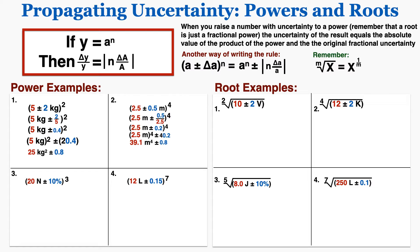Number three has a percent uncertainty, and because percent uncertainties behave similarly to fractional uncertainties — like 10% is just 0.1 as a fractional uncertainty — I can actually just follow that same rule and multiply the power by the percent uncertainty, and that will get me the correct answer.